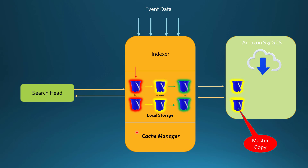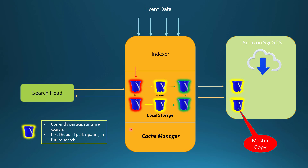This is the Splunk Smart Store solution, and the cache manager plays a very important role in it. How does it determine which warm bucket needs to be present in the indexer layer versus remote storage? It does this based on two things: it calculates which buckets are currently participating in a search, and it also calculates the probability or likelihood of a particular bucket participating in future searches. It mainly concentrates on the most recent indexed data — the warm buckets being created from hot data.